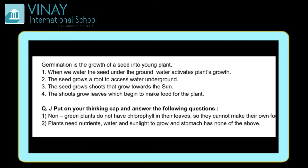Now let's move to Question J: put on your thinking cap and answer the following. First: non-green plants cannot make their own food — why? Because non-green plants do not have chlorophyll in their leaves, so they cannot make their own food. Green color jo hai woh leaves ke andar chlorophyll ki wajah se hota hai; agar leaves green nahi hain, iska matlab chlorophyll nahi hai, aur phir leaves food nahi bana sakti sunlight ki presence mein.